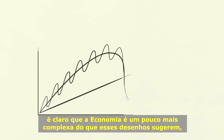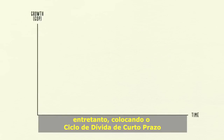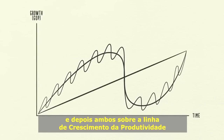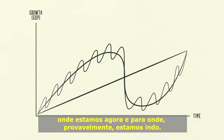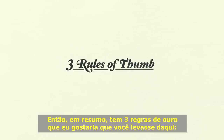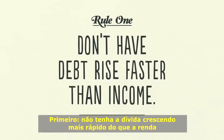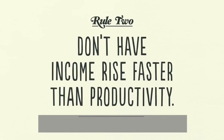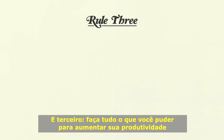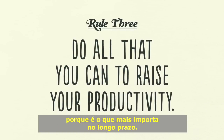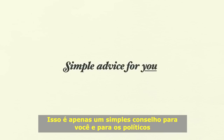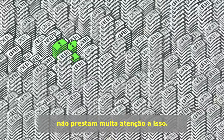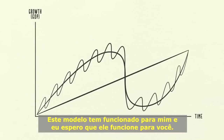In closing, the economy is a little more complicated than this template suggests. However, laying the short-term debt cycle on top of the long-term debt cycle, and then laying both of them on top of the productivity growth line, gives a reasonably good template for seeing where we've been, where we are now, and where we're probably headed. In summary, there are three rules of thumb: first, don't have debt rise faster than income, because your debt burdens will eventually crush you; second, don't have income rise faster than productivity, because you'll eventually become uncompetitive; and third, do all that you can to raise your productivity, because in the long run, that's what matters most. This is simple advice for you and for policymakers. This template has worked for me, and I hope it will work for you. Thank you.